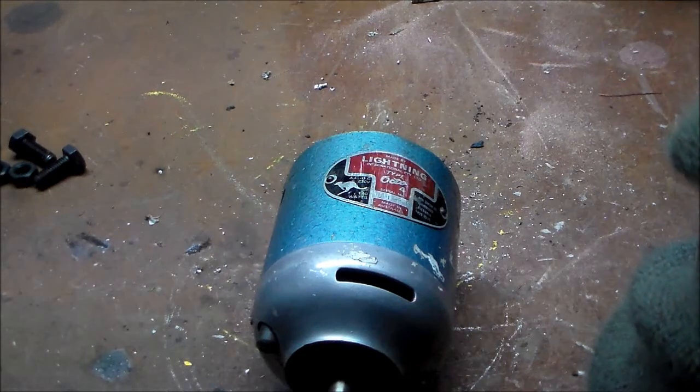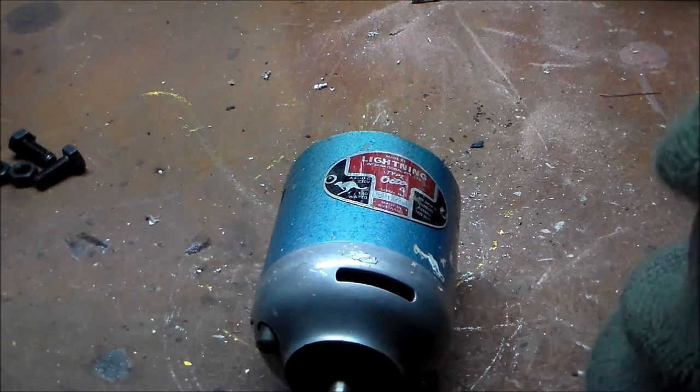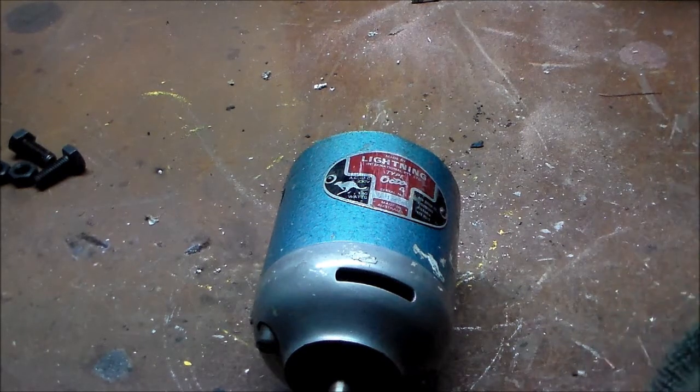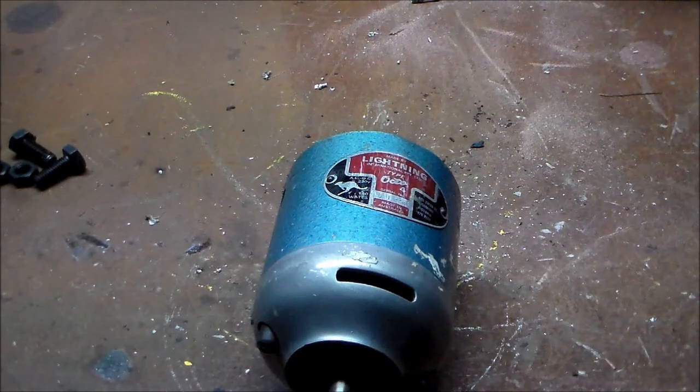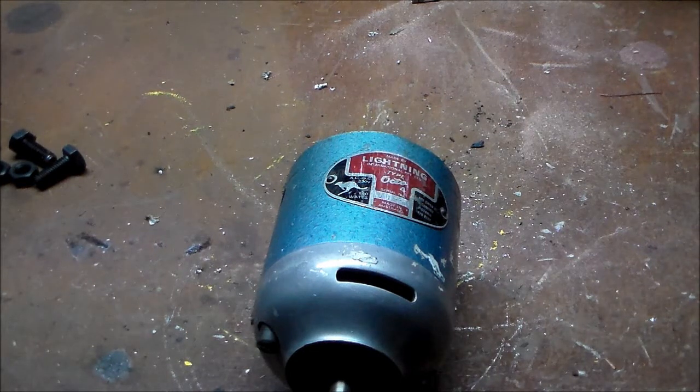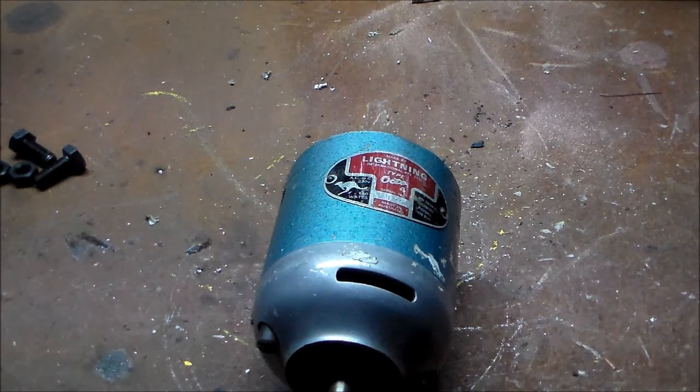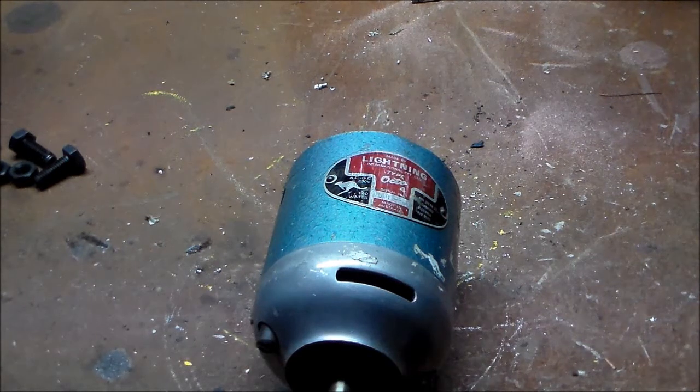It's made by Lightning International Pty Ltd. It's the type, what looks like, Octo-4. Made in 486 Swan Street, Richmond, Victoria. It's even got a phone number, 4592522. Sorry, 4292522.